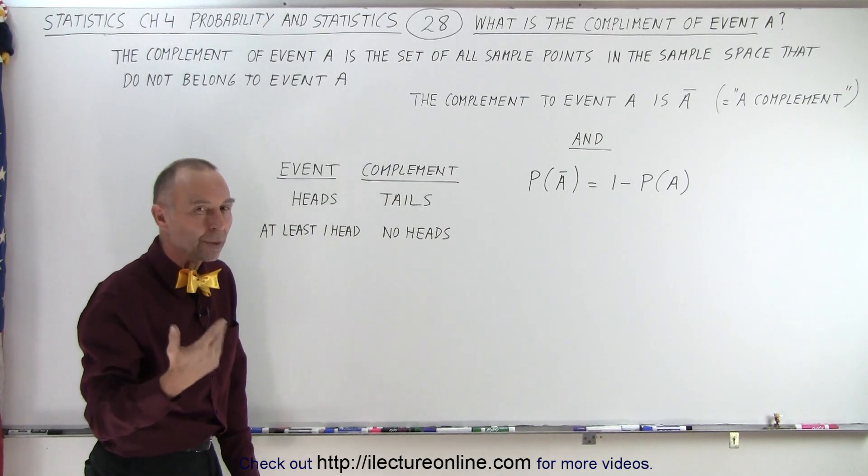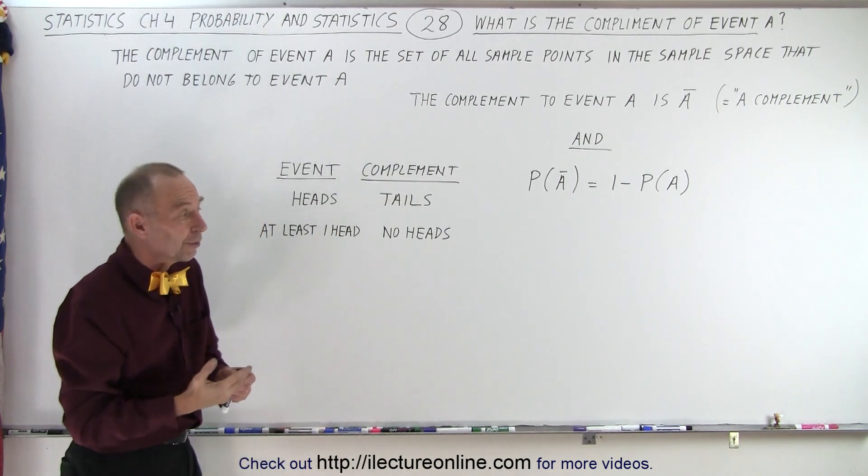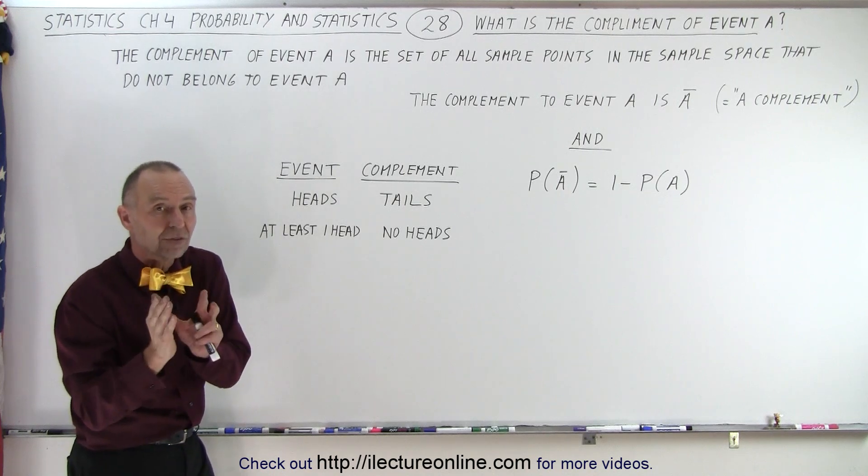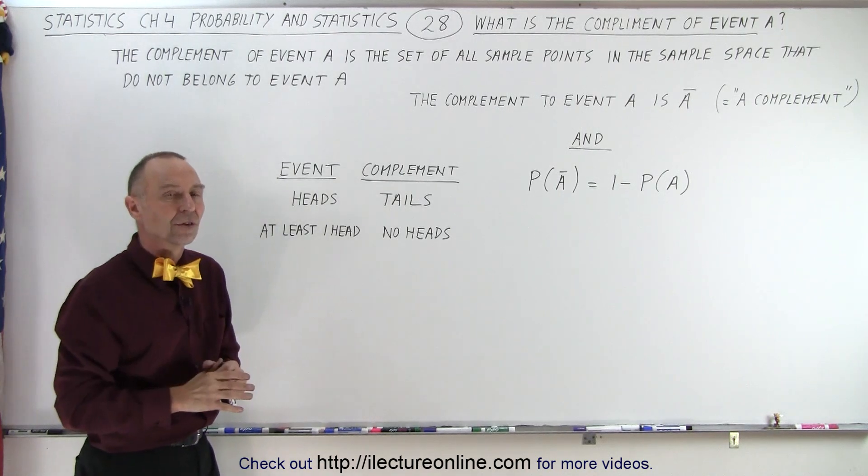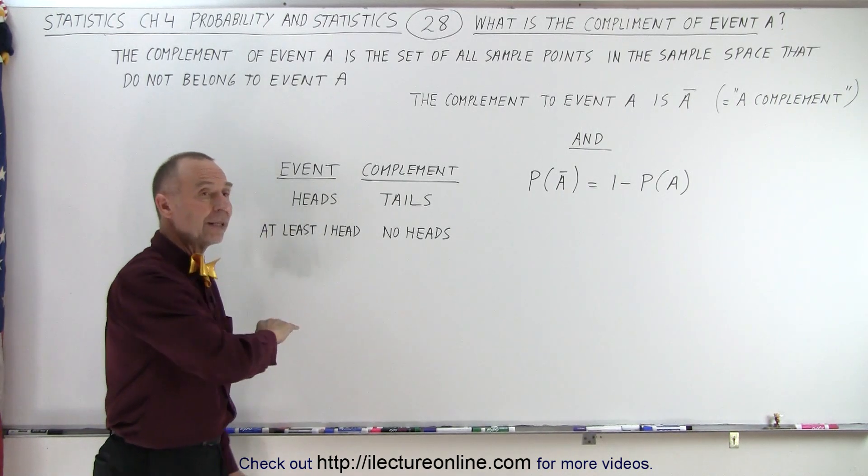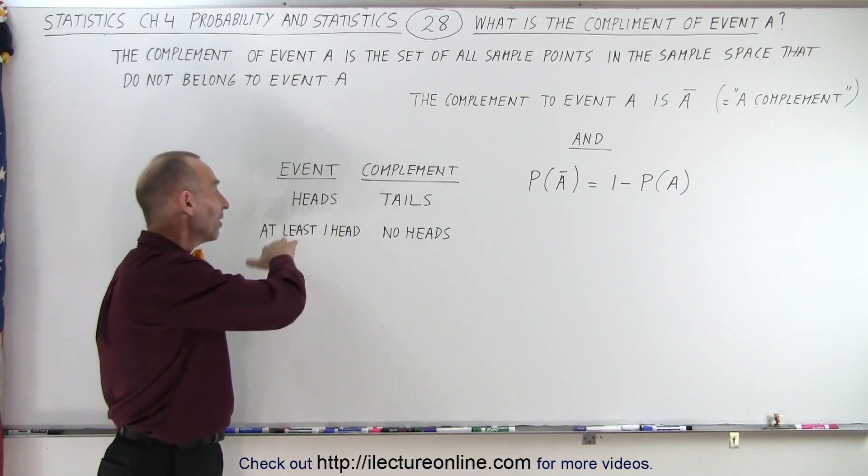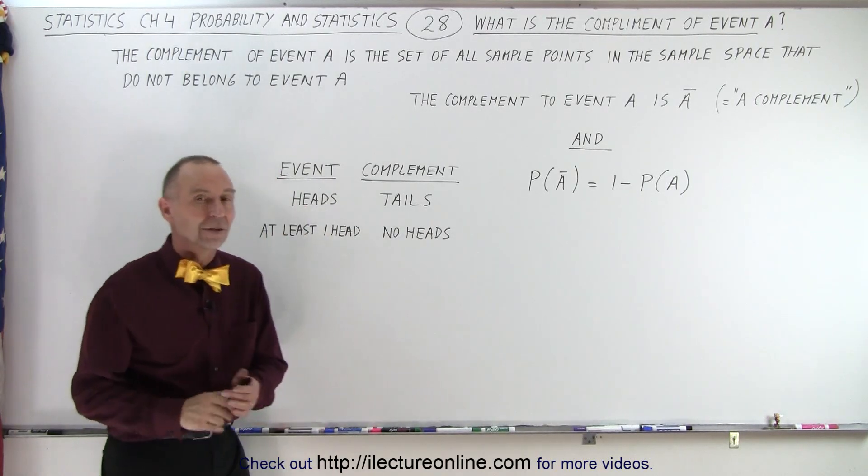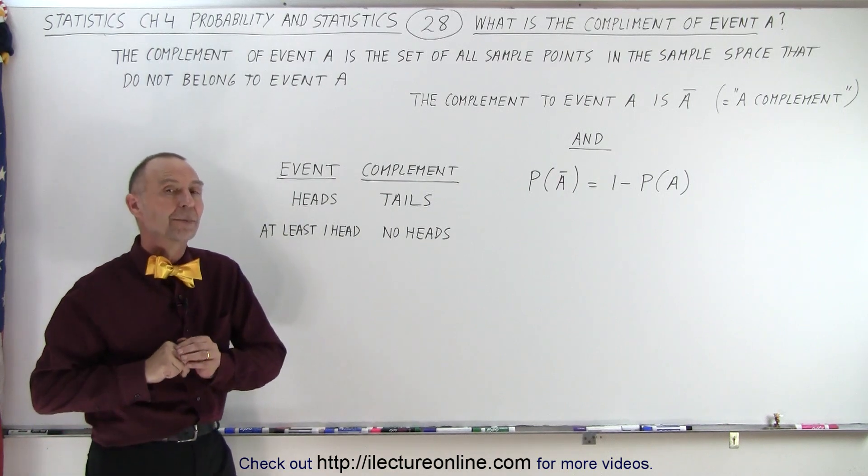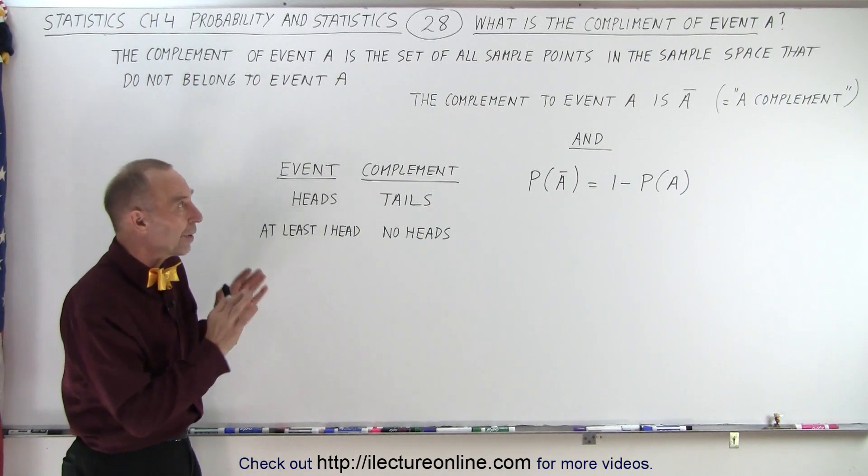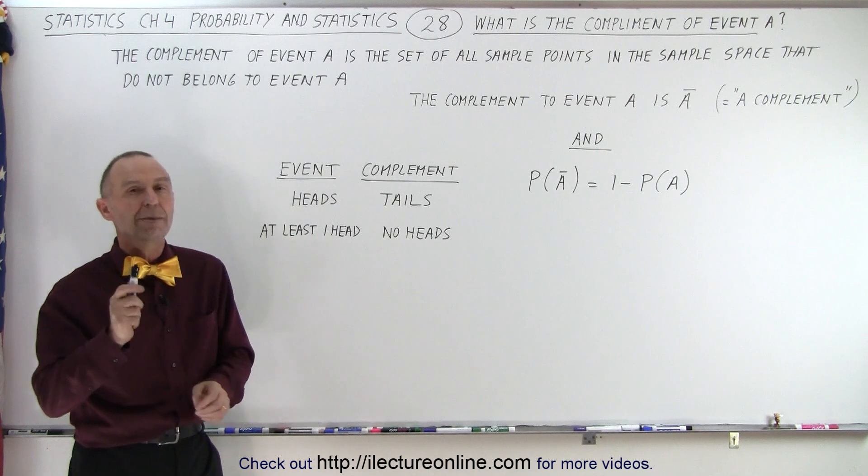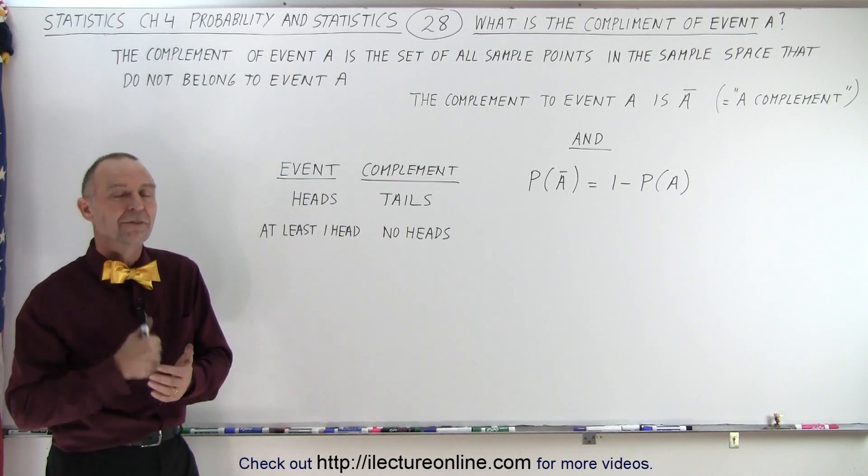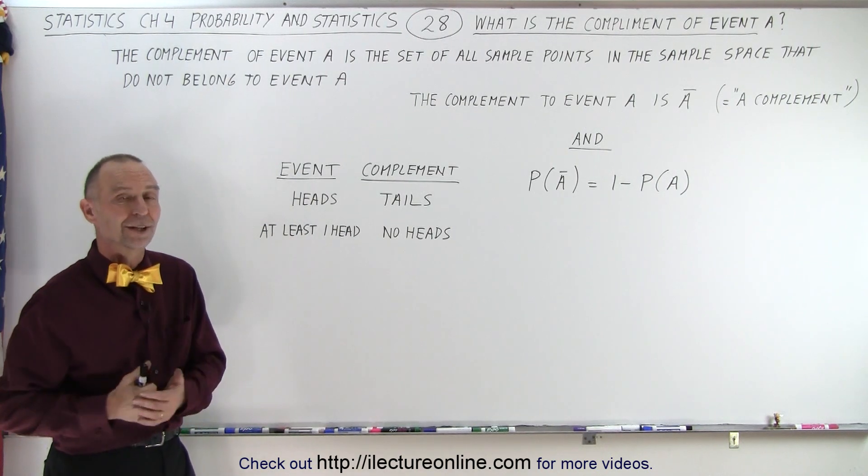And so that's really the way you want to look at it. The complement of an event is everything but that event. Everything else. So if it's at least one head, then the complement is no heads. If it's heads, then the complement is tails. And of course in the future we'll see a number of examples of that as well. But at least now we have the definition of what we mean by the complement of an event. And that is how it's done.